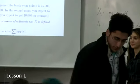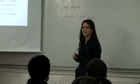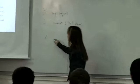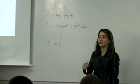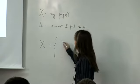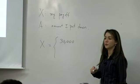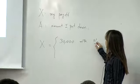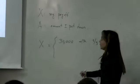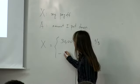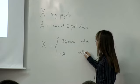What is my payoff equal to? Let's consider the random variable x. x is equal to either: my net gain is 30,000, which happens with probability 1/3 if the die comes up 1 or 2. And my net payoff is negative a, because I lose a units of money with probability 2/3.